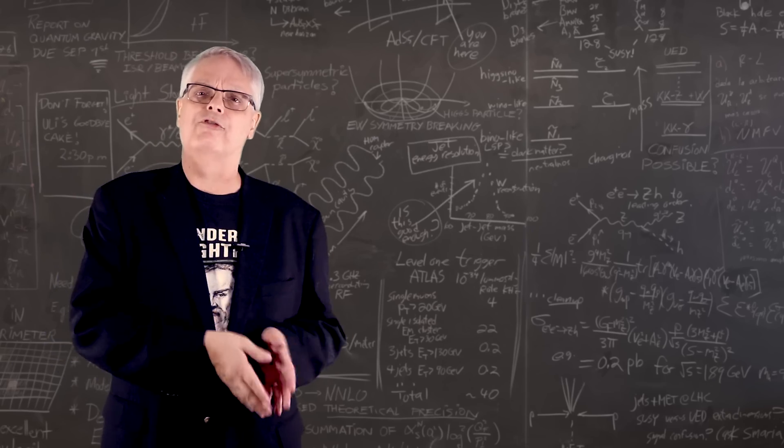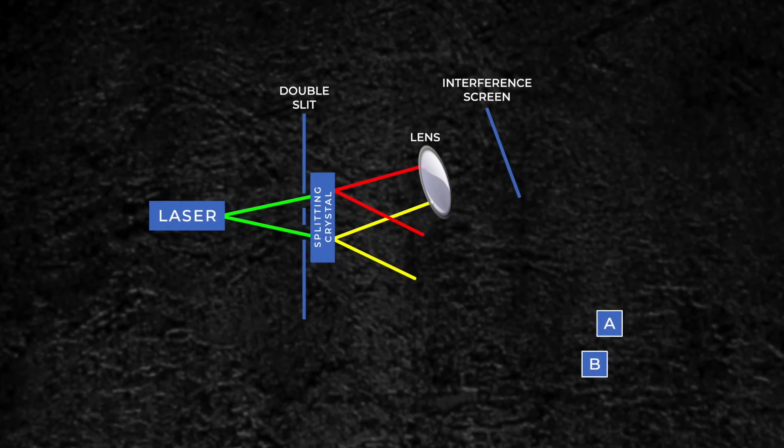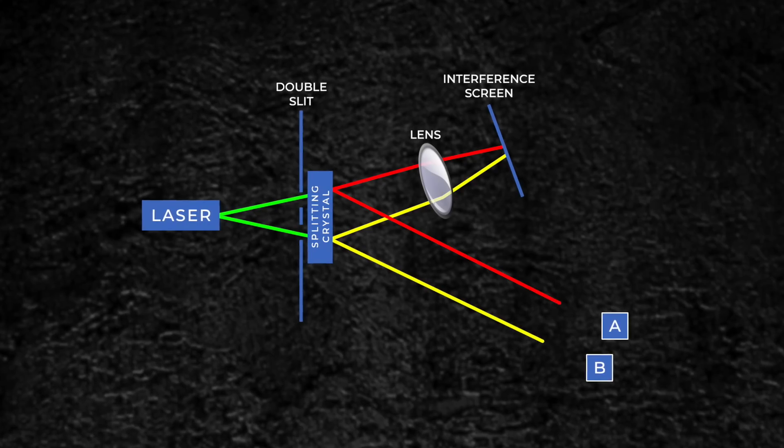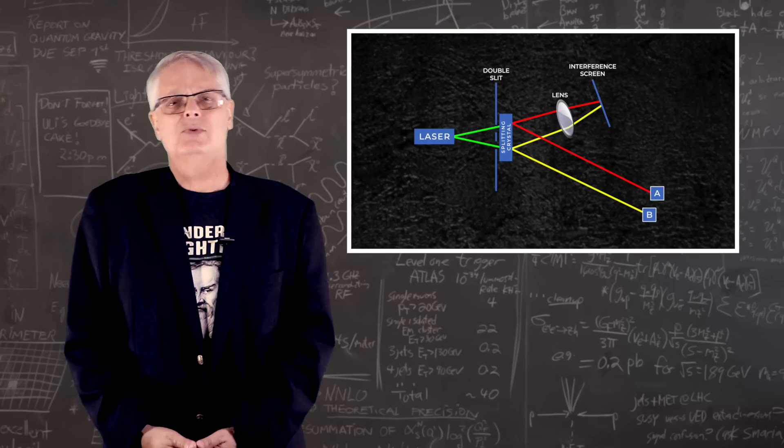Okay, here's the first mind blower. Suppose you make the cables going to A and B very long, so the photon hits the screen before you can measure its cousin in A and B. If you do this, the result is unchanged.